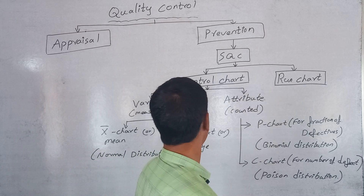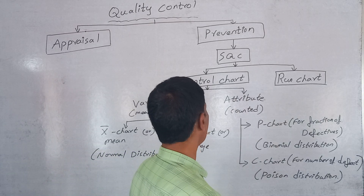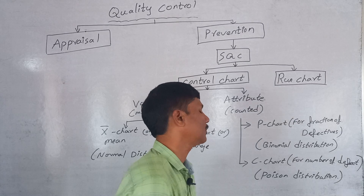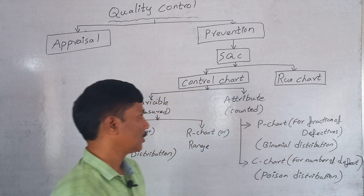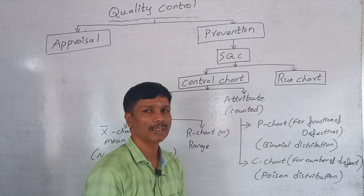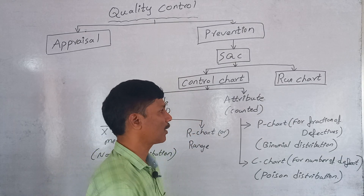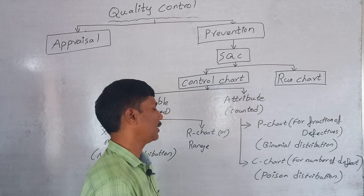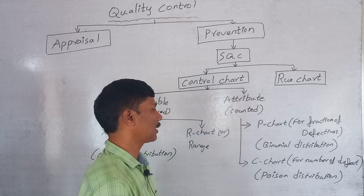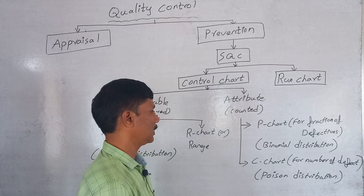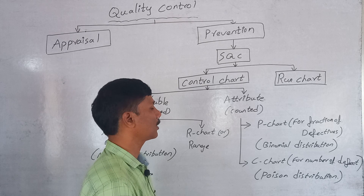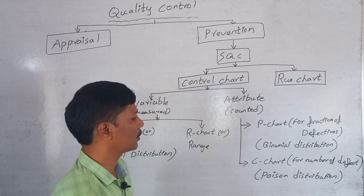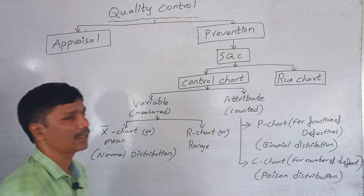Attribute charts are counted; variable charts are measured. An attribute chart means a P chart or C chart. The P chart represents the fraction of defectives, and the C chart represents the number of defectives. The P chart uses binomial distribution and the C chart uses Poisson distribution.